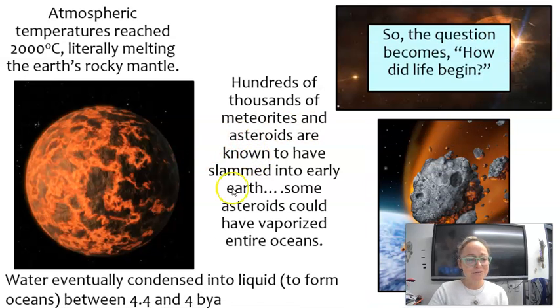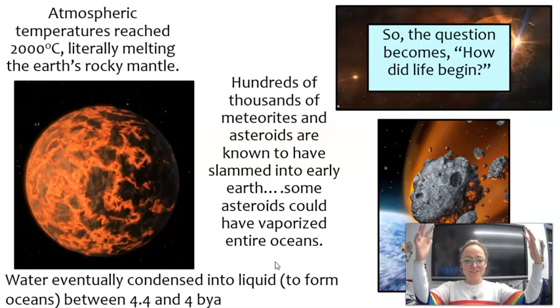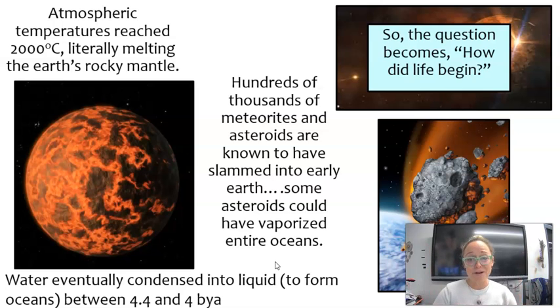It wasn't until about 4 billion to 4.4 billion years ago that water from this hot Earth eventually condensed into liquid form. Let's go back and focus on what our big picture is: talking about the origins of life on Earth. It wasn't until Earth kind of started to settle down a little bit that life began to evolve.